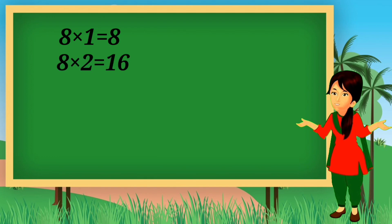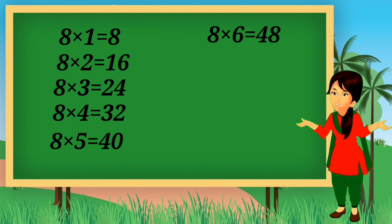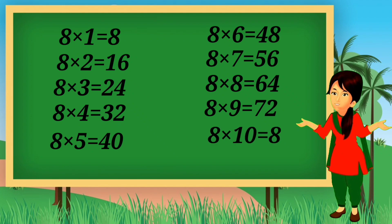8×5=40, 8×6=48, 8×7=56, 8×8=64, 8×9=72, 8×10=80